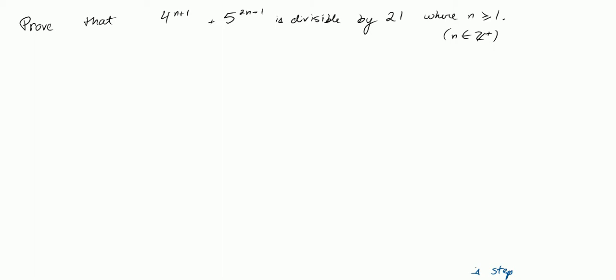In this example of divisibility proofs by induction, I want to show that 4 to the n plus 1 plus 5 to the 2n minus 1 is divisible by 21, where n is greater than or equal to 1. So n is 1, 2, 3, and so on. In this case, n is just any positive integer.